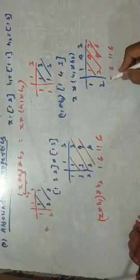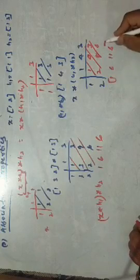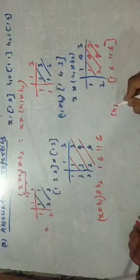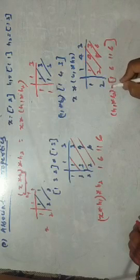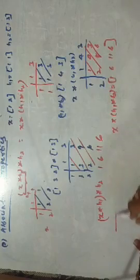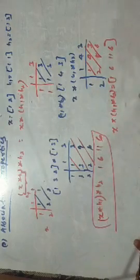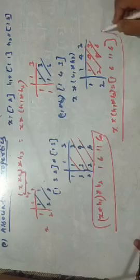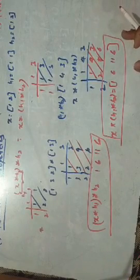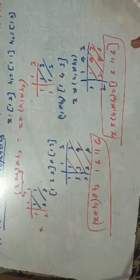See that in both cases, LHS is equal to RHS — both give 1, 6, 11, 6. This tells us that the convolution holds good for the associative property also.